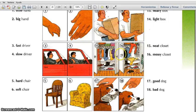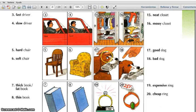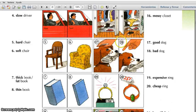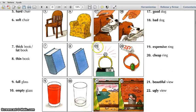Number 17: good dog. Good. Number 18: bad dog. Bad. Number 19: expensive ring. Expensive. Number 20: cheap ring. Cheap.